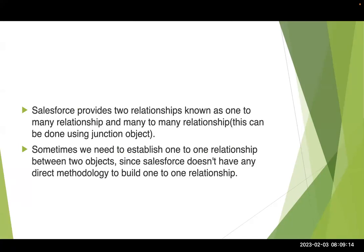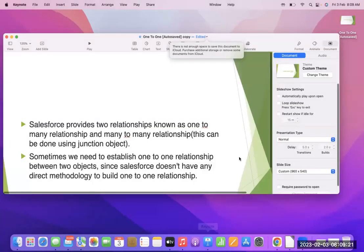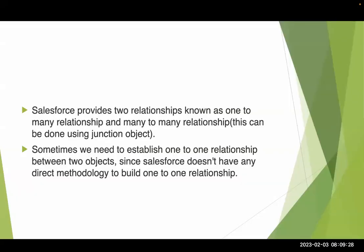First of all, does anyone know Salesforce relationships? How many relationships are there? There are three. One-to-many — one parent can have multiple children. Many-to-many. And hierarchical, which is again like a one-to-many. But there is no direct one-to-one relationship.